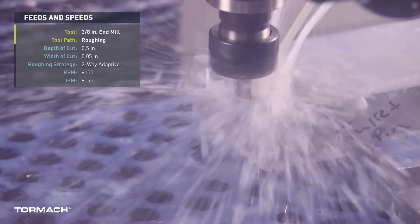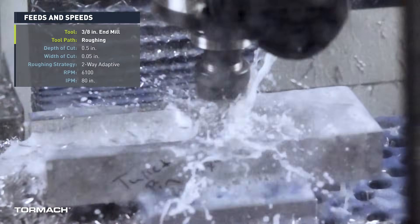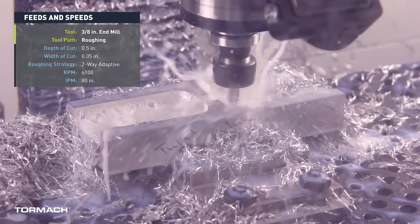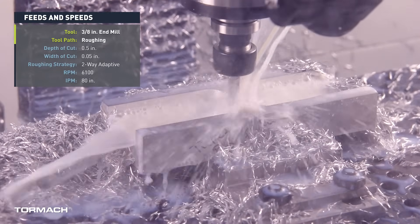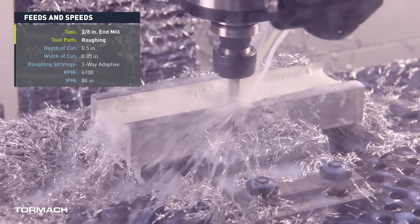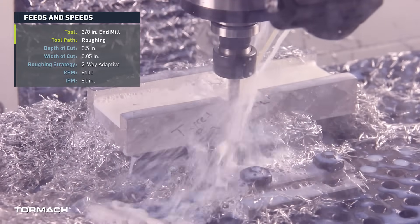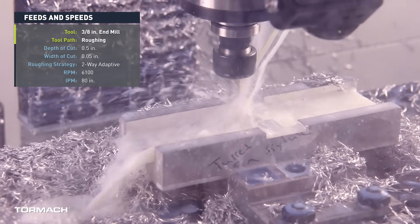We roughed it out with a 3/8 inch end mill. This ran at a half inch depth of cut with a 50 thousandths width of cut. We used a two-way adaptive roughing strategy on this, running at 6,100 RPM at 80 inches a minute. This ran real well. The two-way adaptive strategy definitely worked out nicely with this part. It really helped the efficiency of the roughing cycle.